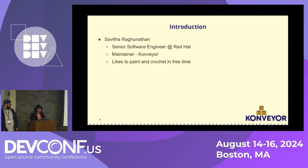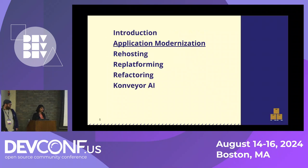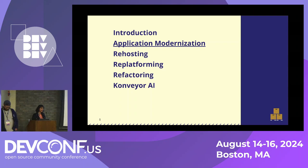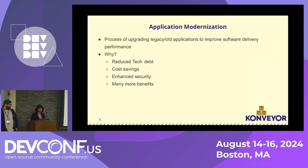In this session we're going to learn a little bit about why application modernization is needed, and we're going to go a little bit deeper into some of the strategies that the Konveyor project supports. We are also going to get a sneak peek on Konveyor AI, which is the latest thing that we are developing right now.